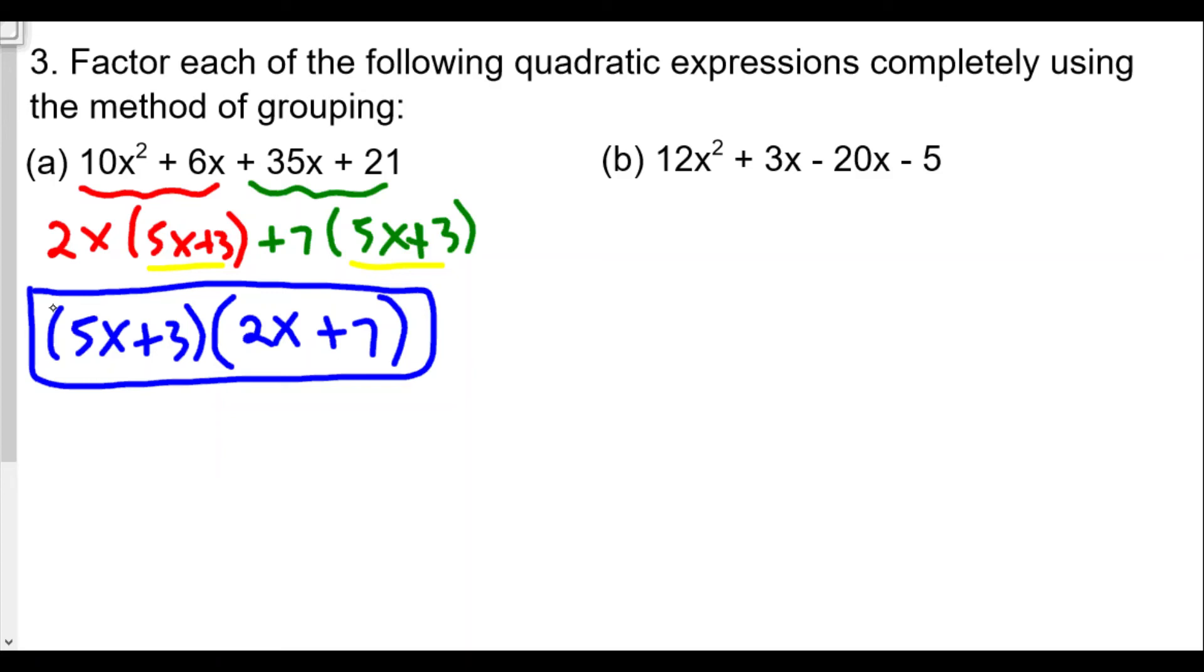Let's see this happen for letter B. Again, we'll group together the 12x² + 3x, and we'll group together the -20x - 5.